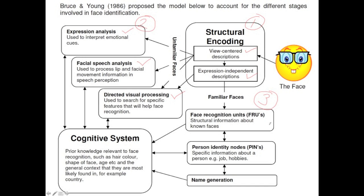The next step accesses biographical information through what are called the PINs — the person identity nodes. For example: what job does this person have? What hobbies do they have? Is this person in my psychology class? That man was in that film. Finally, and extremely quickly, a name is generated. So that man with short hair and quite a distinct nose — he's an actor, he was in the Mission Impossible films — oh, it's Tom Cruise.